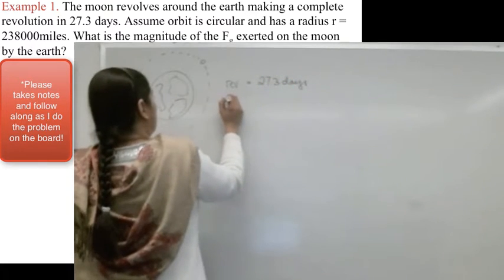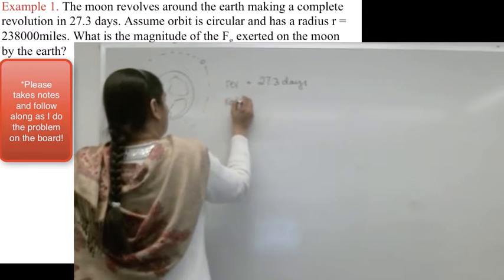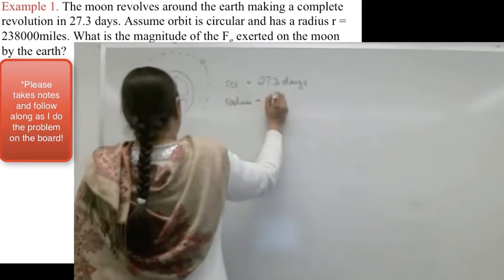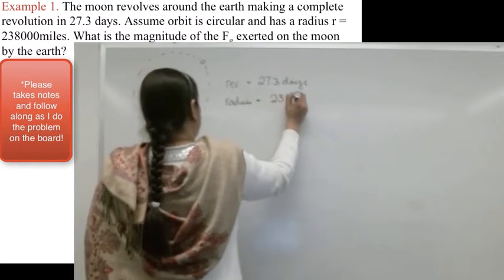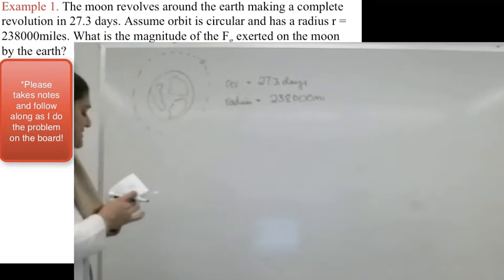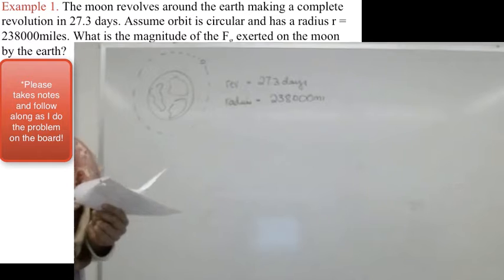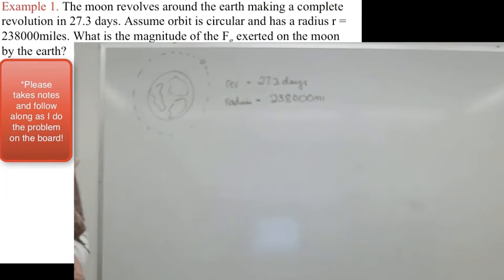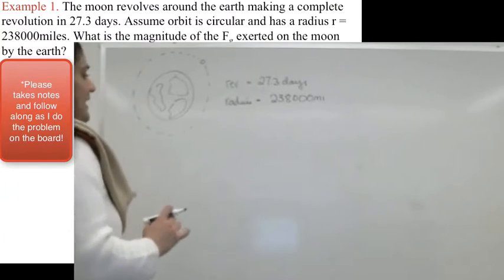And the question gives me that the radius of this orbit is 238,000 miles. Now it's asking me what is the magnitude of force exerted on the Moon by the Earth?